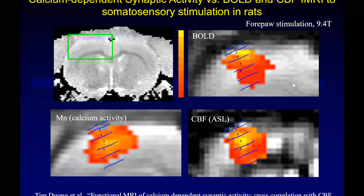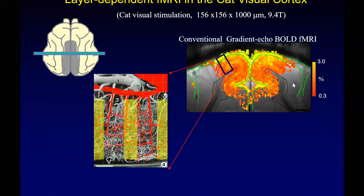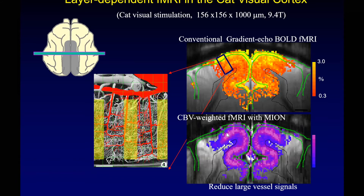We then developed the cat visual stimulation model in our laboratory, and spent a lot of time looking at layers in the cat visual cortical area. This is essentially a BOLD fMRI study — this area is the CSF, and this is the white matter area. During stimulation you see a lot of activity at the surface cortex, which is the well-known draining vein problem. When you inject the contrast agent, which makes CBV contrast, you can see the highest activity now in the middle of the cortex. There is a big difference between the BOLD and CBV fMRI.